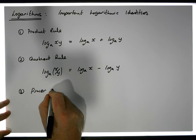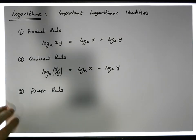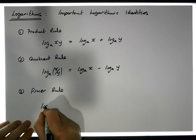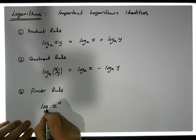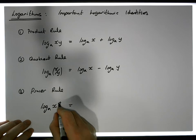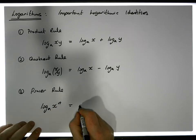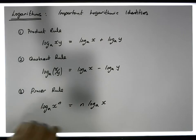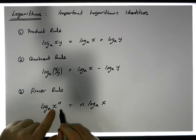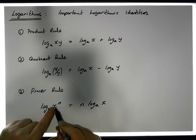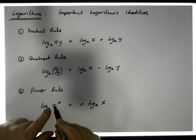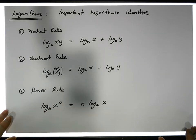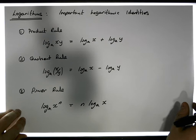Another important rule — rule three — is the power rule. The power rule says that the log of x to the power of n, to the base a, is the same as the exponent n times the log of x to the base a. It's a really important rule because it allows us to break apart an exponent from its particular base.